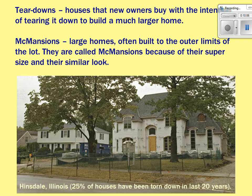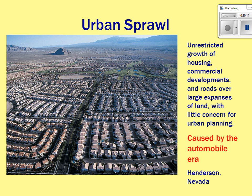Urban sprawl — Atlanta is a classic example — is the unrestricted outward spreading of cities, caused largely by the automobile era. Once people had cars, they spread out to suburban areas and commuted in. That's why the Atlanta metropolitan area now spans roughly 28 counties — people simply keep commuting further and further into the city.